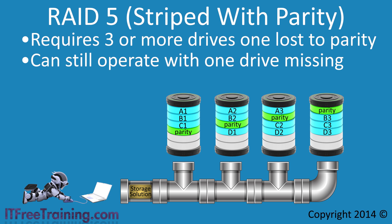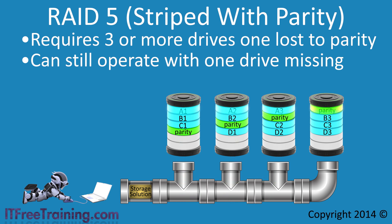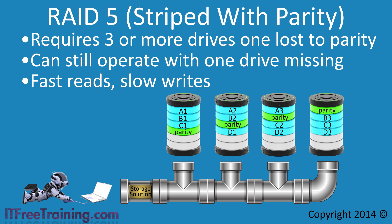RAID 5 has additional advantages other than redundancy. When a file is read, three of the drives are used at once, meaning read performance on RAID 5 is excellent — the more drives in RAID 5, the faster the read performance. However, when a file is written, all drives including the parity drive are used. Since the parity also needs to be updated, the other drives may need to be read to find out what data exists. Regardless of how little or how much data is being written, all RAID 5 drives need to be involved. This makes RAID 5 very fast for reads but very slow for writes.